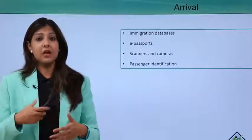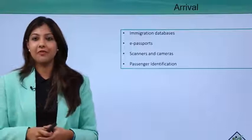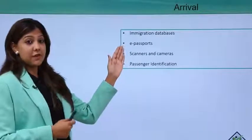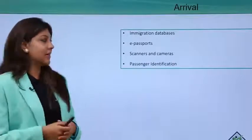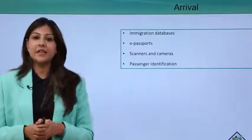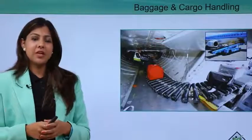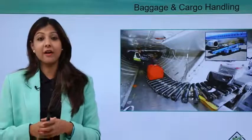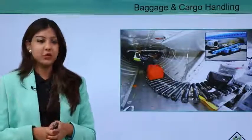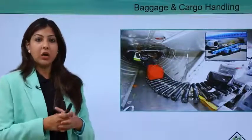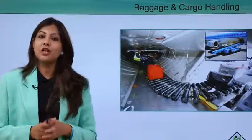At arrival, passengers have access to immigration databases; those travelling internationally fill in immigration forms during the flight. E-transport passes are provided, and scanners and cameras are placed throughout for security purposes. Passengers must identify themselves again at immigration or transit points. For baggage and cargo handling, checked baggage goes into the aircraft cargo hold, and upon landing, baggage handling staff place it on a conveyor belt, which delivers it to the baggage claim area of the destination airport.